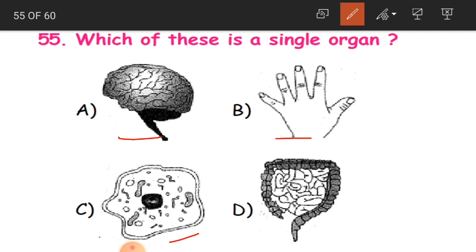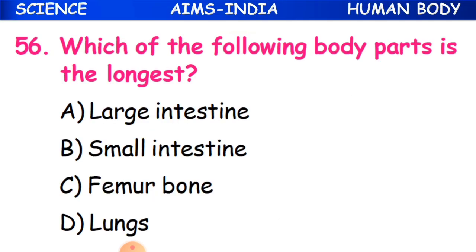Question 55: Which is a single organ? The options are brain, hand, amoeba (a single organism, not an organ), and intestines. The hand has a single organ, so B is the correct answer.